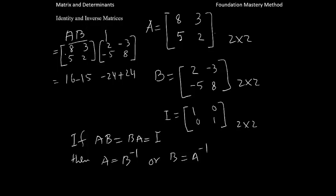Now go with the second row now. So 5 times 2 is 10, minus 2 times 5 is 10 again. 5 times negative 3 is negative 15, 2 times 8 is positive 16. So when we simplify, we see that it is 1, 0, 0, 1. So you see this is identity.